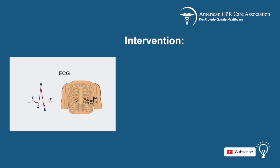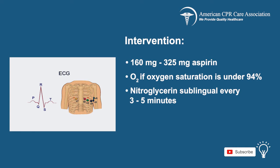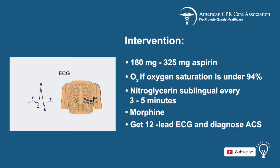Now, start with the interventions. Give aspirin from 160 mg to 325 mg to the patient. Administer oxygen if oxygen saturation is under 94%, and administer nitroglycerin sublingual every 3 to 5 minutes and morphine for the pain. Then, conduct a 12-lead ECG and diagnose the ACS.